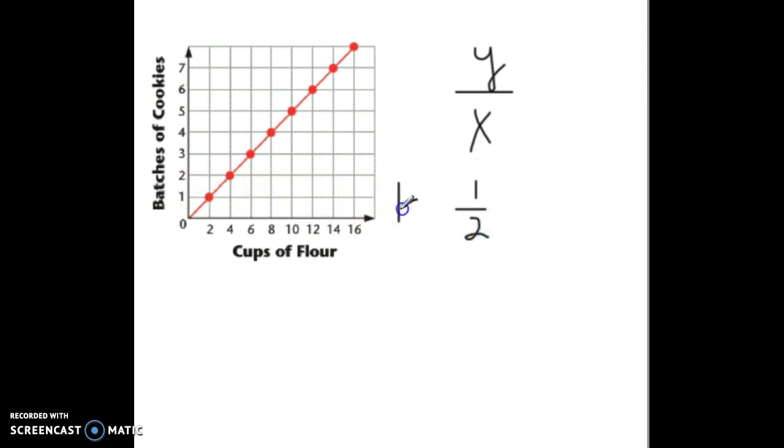Or in this case, 1 half. But what does that 1 half mean? It means we'll have 1 half batches of cookies. So a batch of cookies is just how much ever you make at one time. So a half a batch of cookies for every one cup of flour. So if you have one cup of flour, you can make half a batch of cookies. I wish we could make a whole batch because I'm getting kind of hungry.